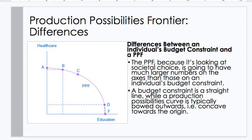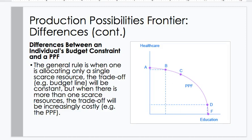Production possibilities frontier differences: the PPF, because it's looking at societal choice, will have a much larger number on the axes than those on an individual's budget constraint. A budget constraint is a straight line, while a production possibilities curve or frontier is typically bowed outwards — i.e., concave towards the origin. The general rule is when allocating only a single scarce resource, the trade-off (e.g., the budget line) will be constant. But when there's more than one scarce resource, the trade-off will be increasingly costly — e.g., the PPF will be bowed out.